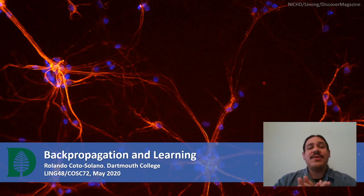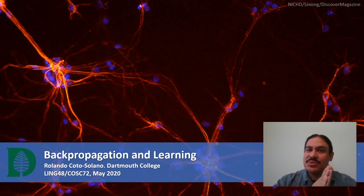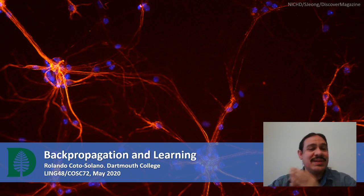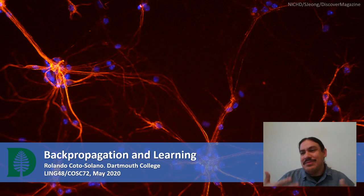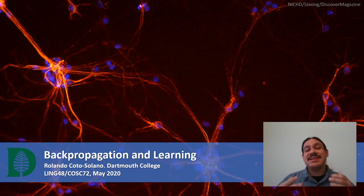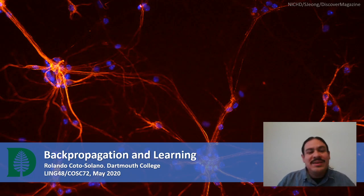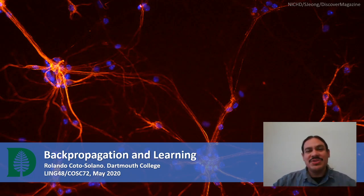We're going to do a very quick introduction to two concepts: neural networks and back propagation. Here we'll have a toy example of how a neural network can learn to classify features that it sees. By the way, if you have taken machine learning before, this is an optional video — it's just training a simple perceptron with back propagation.